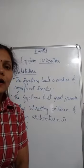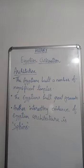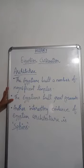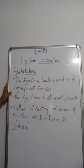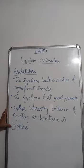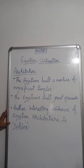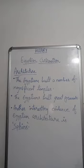Architecture of Egyptian civilization: The Egyptians built a number of magnificent temples with big halls and many columns. They also built great pyramids, which were royal tombs — huge structures made of stone. Another interesting feature is the sphinx, a legendary figure with the body of a lion and the head of a man. The most famous pyramid is the Great Pyramid of Giza, near Cairo, the capital of Egypt, built by the Egyptian king Khufu.